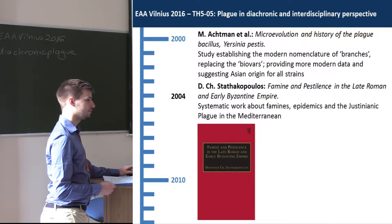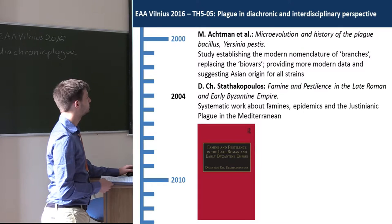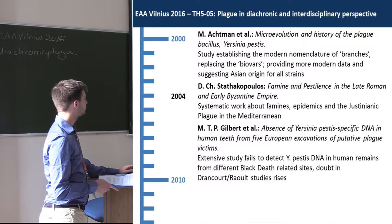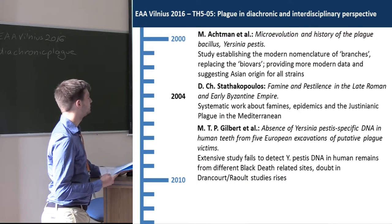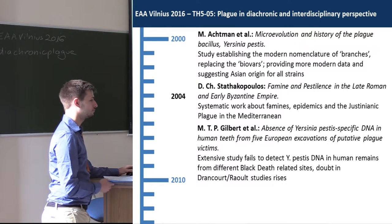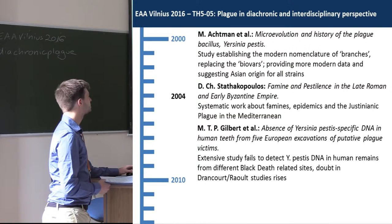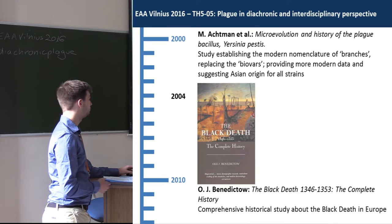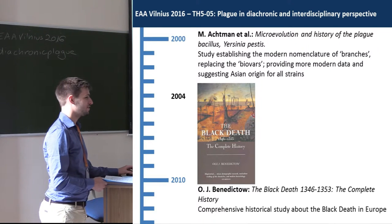In the same year, there was a published PhD thesis by Stathakopoulos on famines and epidemics, focusing mainly on the Justinianic plague in the Mediterranean area. Also that year, a large study by Gilbert and colleagues extensively tried to find Yersinia pestis in various archaeological contexts but found no evidence, thereby casting doubt on earlier studies by Drancourt and Raoult. Finally, Ole Benedictov published his complete history of the Black Death.